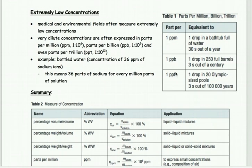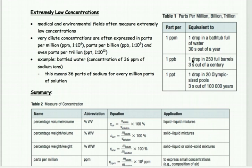One part per million (PPM) is like one drop in a bathtub full of water, or 30 seconds out of a year. Parts per billion is even tinier — one in a million, like 3 seconds out of a century or one drop in 250 barrels of water. Parts per trillion is like one drop in 20 Olympic-size pools, or 3 seconds out of 100,000 years. As we go along, the scale gets smaller and smaller.